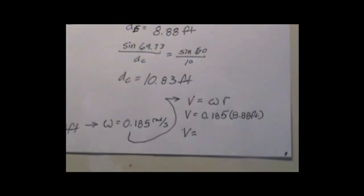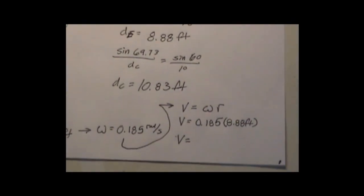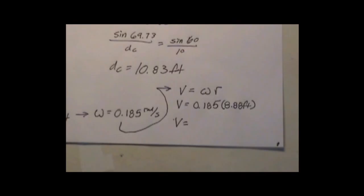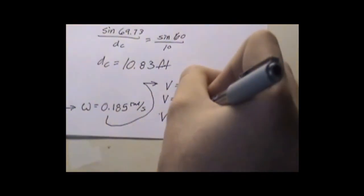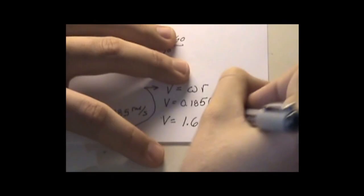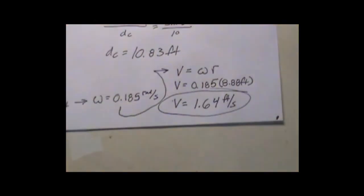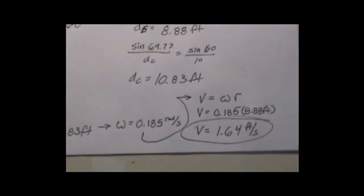Velocity at point A is 0.185 times 1.64 feet per second. That is the velocity at point A. Now we need to do acceleration. The only way to do acceleration is you can't use IC method. Now I need to go through it and do it in X, Y, and Z coordinates.